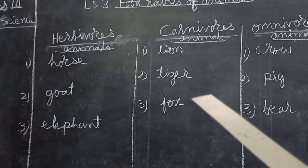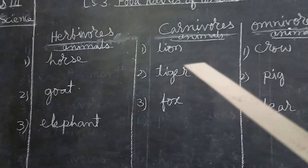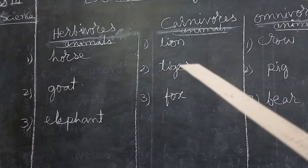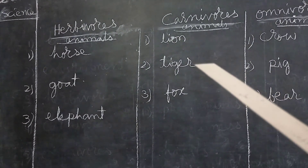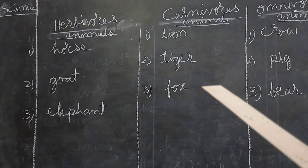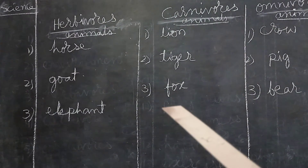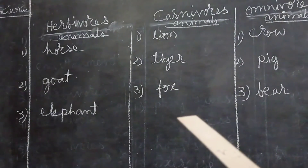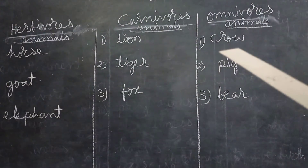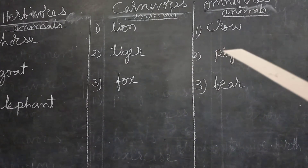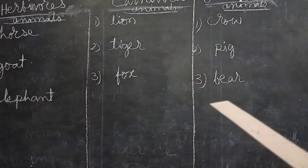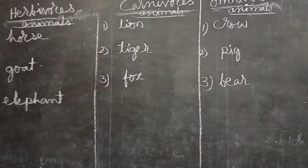Second column is carnivores: lion — L-I-O-N, tiger — T-I-G-E-R, fox — F-O-X. Then in the omnivores column: crow — C-R-O-W, pig — P-I-G, bear — B-E-A-R.